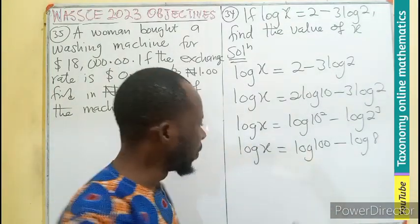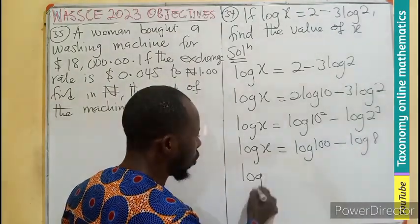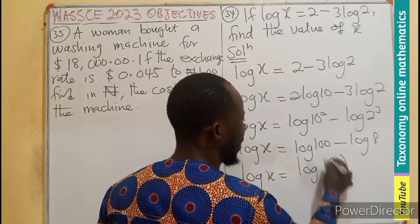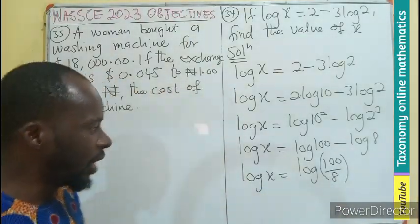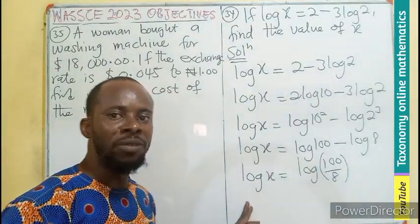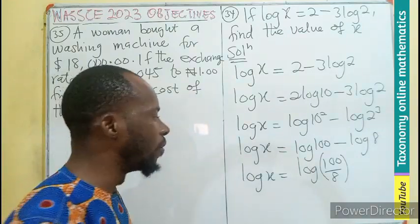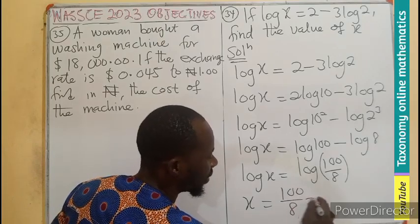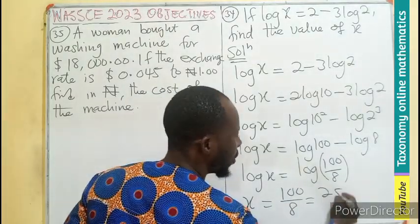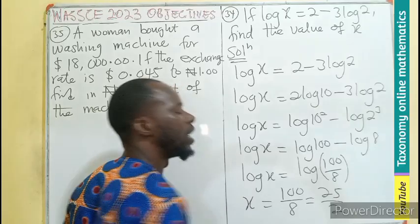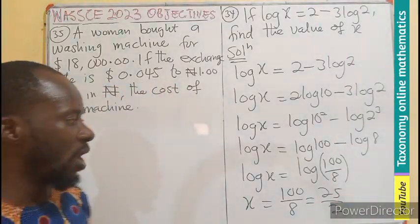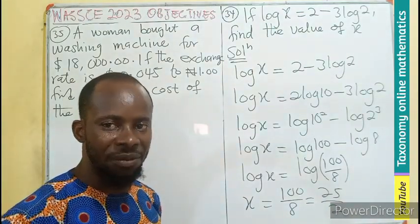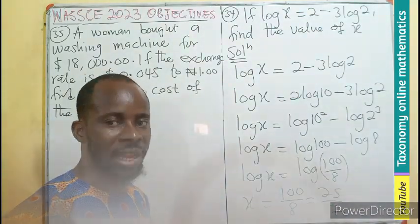I can divide the argument. So this means log x = log(100/8). And I believe you can see logarithm at both sides. So we take the anti-log of both sides. So on the possible answers, the answers were left in fraction form. So this is going to be 25/2 as the value of x.